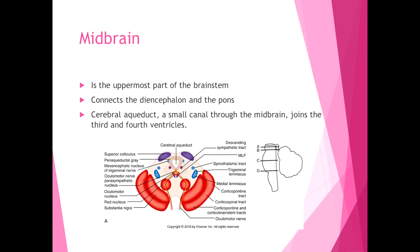The midbrain is the uppermost part of the brainstem, connecting the diencephalon — which includes the thalamus — and the pons. The cerebral aqueduct, through which CSF flows, is a small canal through the midbrain joining the third and fourth ventricles, visible in cross-section at the center. Several familiar spinal cord tracts travel through the midbrain, including the spinothalamic tract and the medial lemniscus, after the dorsal column passes on its information.